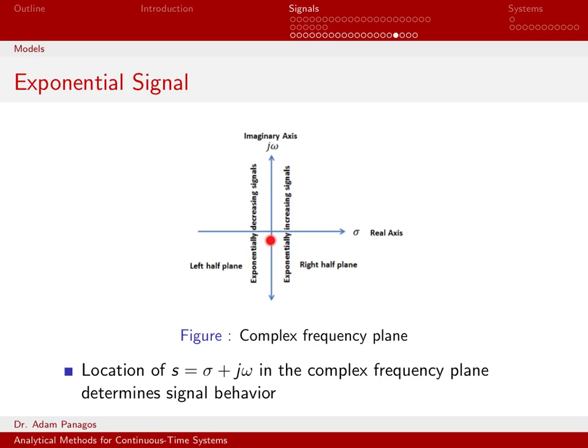If s was 4 plus j4, that would be some point out here. So any point in this complex plane is a potential value for s, and each of those values for s has a real component, an imaginary component.